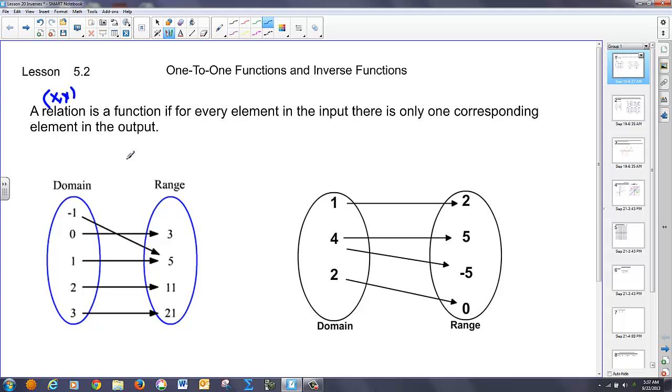A relation is going to be a function if for every element in the input there's one corresponding element in the output. So we notice that in this case here, 1 has only one output of 5, negative 1 has one output of 5, 0 has one output of 3, 2 has one output of 11, 3 has one output of 21.